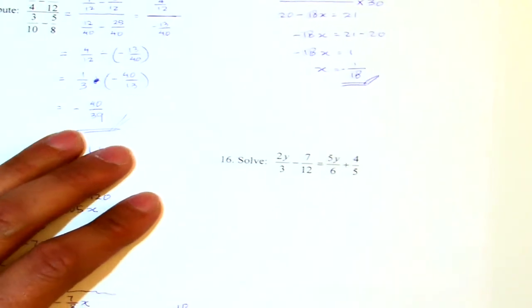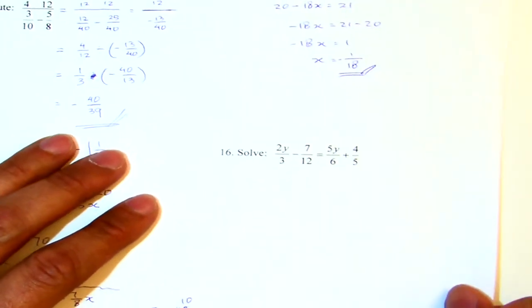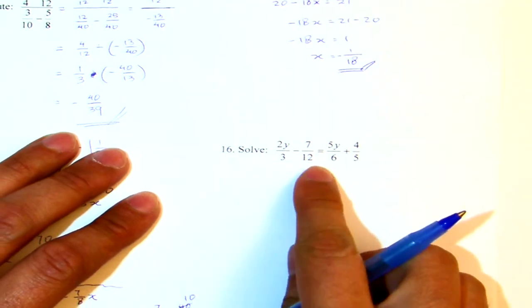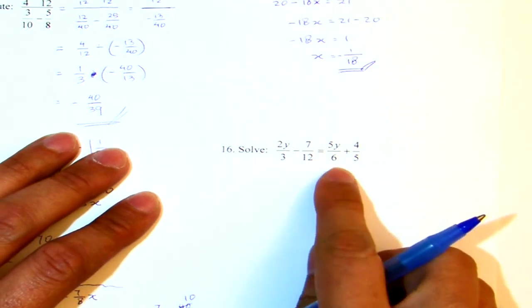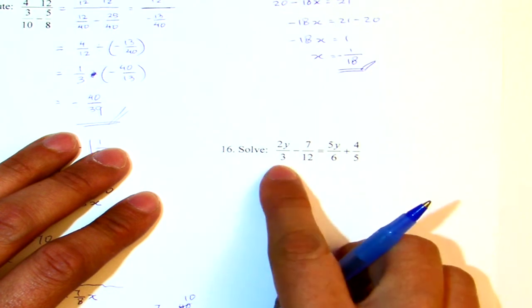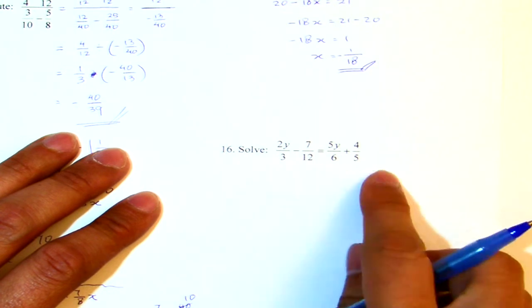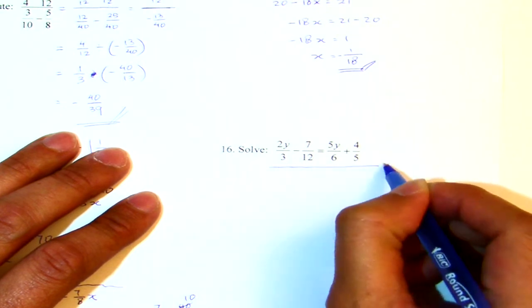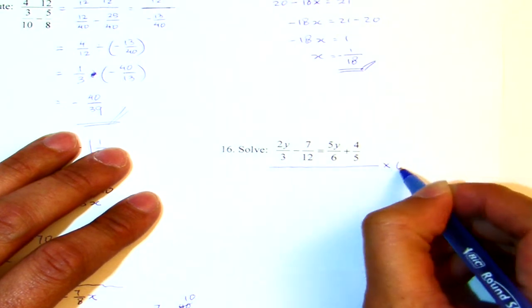Now, let's take a look at number 16. What is the LCD of this equation? 3 and 12 give me 12. 12 and 6 still give me 12. 12 and 5 give me 60. I think that's not too big. So I multiply the whole equation by 60.